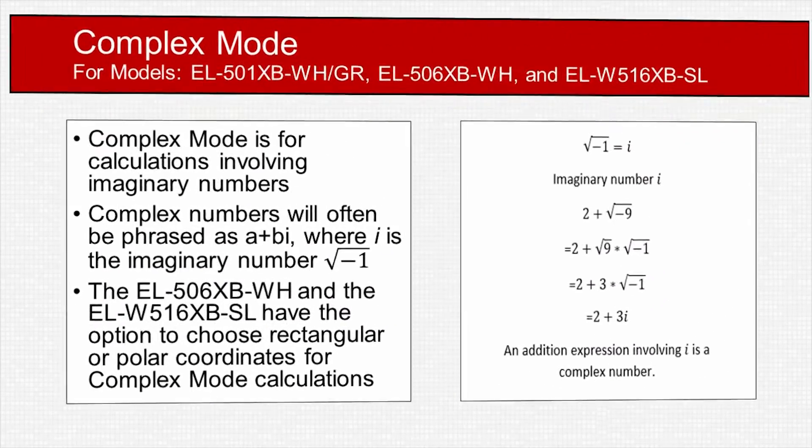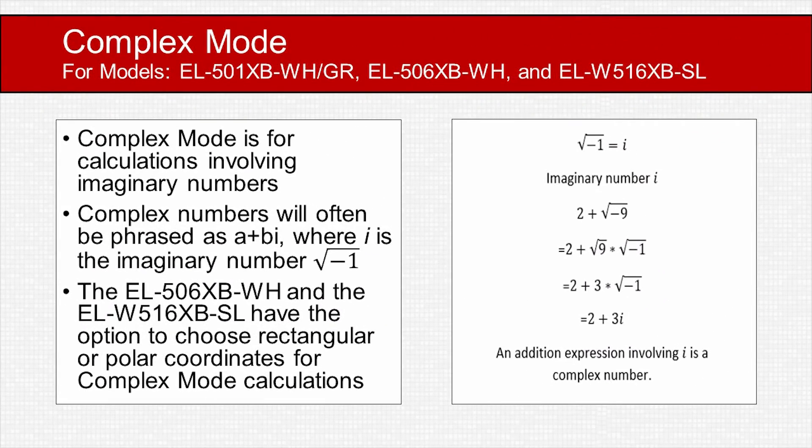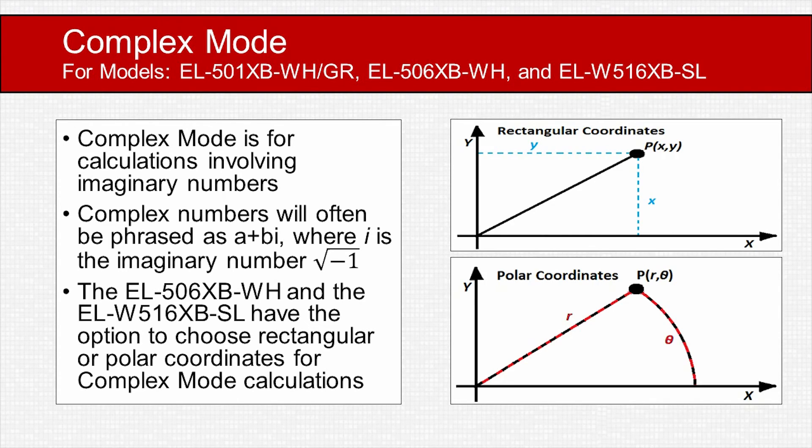Complex mode is used for calculations involving imaginary numbers. An imaginary number, represented by the letter i, is the square root of negative one. Complex numbers are often a combination of real and imaginary numbers, phrased as a plus bi. Some calculators have the option to choose rectangular or polar coordinates for complex mode calculations, allowing the user to further tailor the calculator settings for the specific problem they are solving.